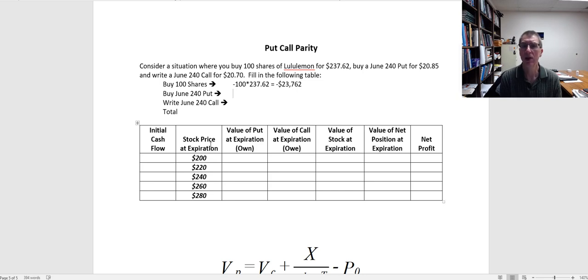Then I'm going to buy 240 put contract, so again the contract is 100 options per contract. I'm buying it, so it's a cash outflow. And that contract is going to cost me $20.85, which is a negative outflow of $2,085.